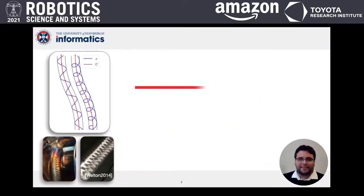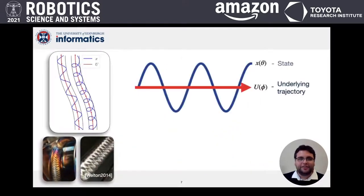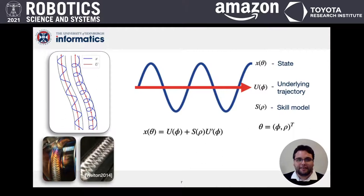Key to our model is the distinction between the state and underlying trajectories, and a skill model. Combining their parameterizations results in an encoding theta, describing the state found by this functional. Controls are taken as the derivative of states.